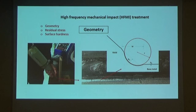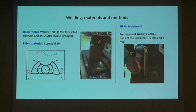In this paper, we used base metal Weldox 1300, which has almost 1300 megapascal yield strength, and filler material Corew eld 89 to produce T-joint welds by this dimension and sequence using gas metal arc welding.